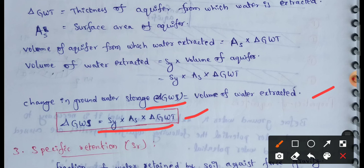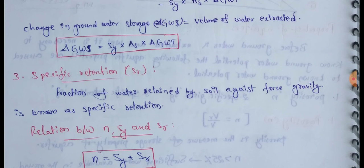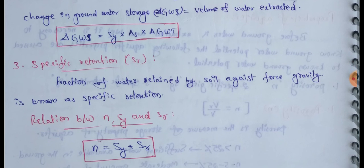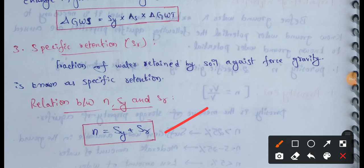Next: specific retention (Sr). The fraction of water retained by soil against the force of gravity is known as specific retention. There is a very important relation between porosity, specific yield, and specific retention: porosity equals specific yield plus specific retention (n = Sy + Sr).